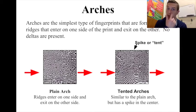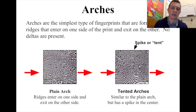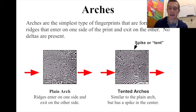Arches are the simplest type of fingerprints, essentially formed by a ridge that enters into the fingerprint on one side and exits on the other — a single line that goes from one side to the other. The only difference between a plain arch and a tented arch is that you can follow the line and it has a more exaggerated spiky tent. These are very rare, so if you have one when we're doing lab this week, it's kind of neat.